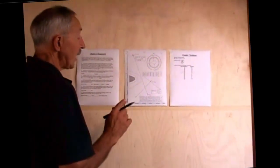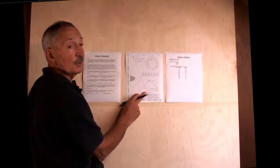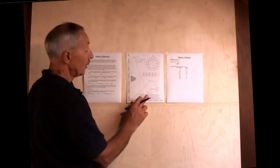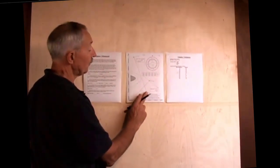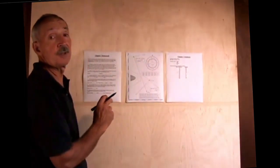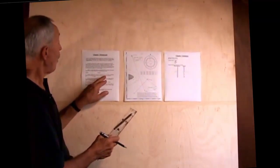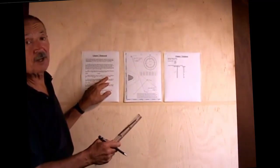I steered for this point, the DR, but I ended up here. Therefore, the current must have pushed me from here to here during that period of time. The question is, what was the current set and drift?